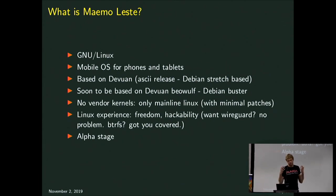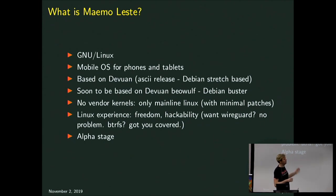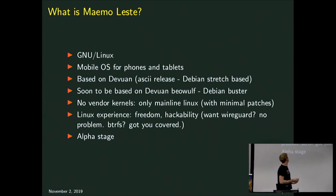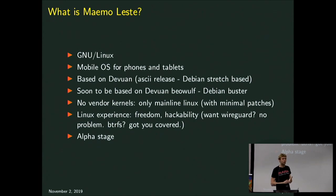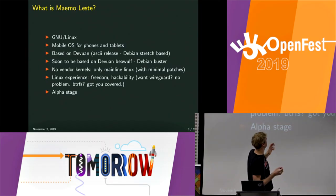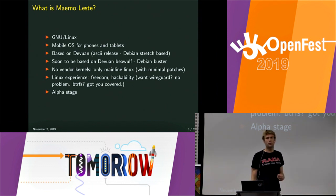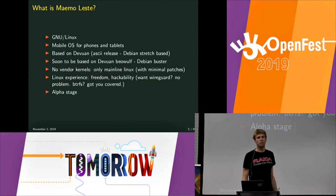Android is also Linux, but it's not GNU slash Linux. It's Linux with a lot of other Java stuff on top. So when I say GNU slash Linux, I mean you take a GNU Linux distribution like Debian and make it work on your phone. Maemo Leste is a mobile phone OS for phones and tablets — smartphones, some tablets work — and it's based on Dev1, which is pretty much Debian but without systemd, so we replace some parts of Debian that we don't like.